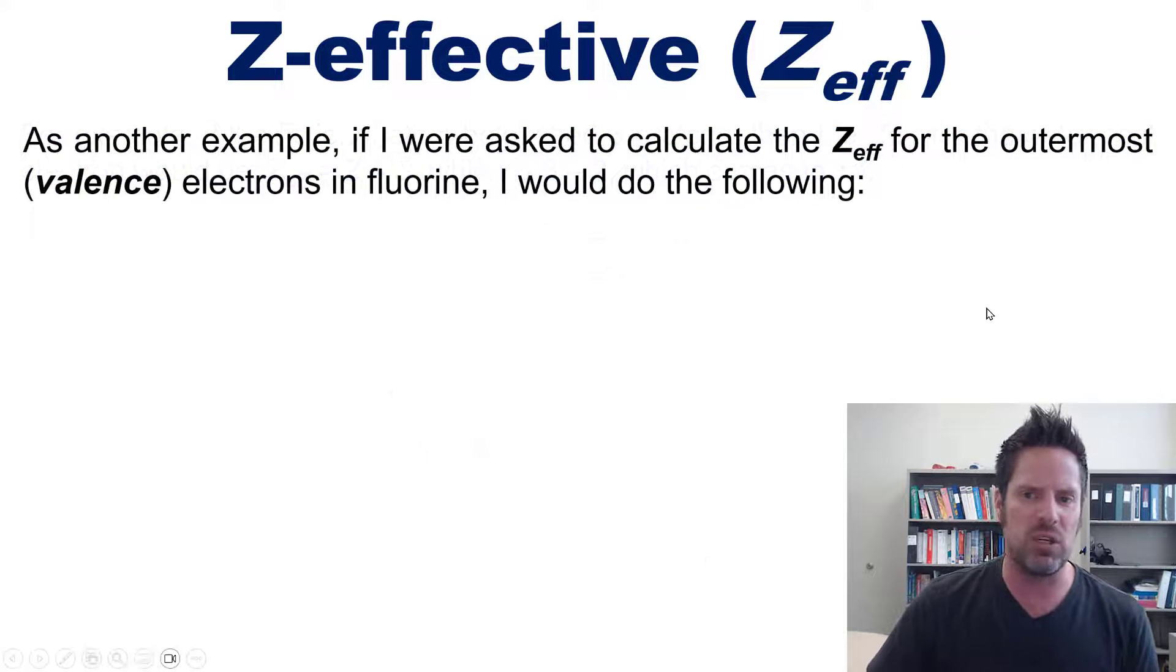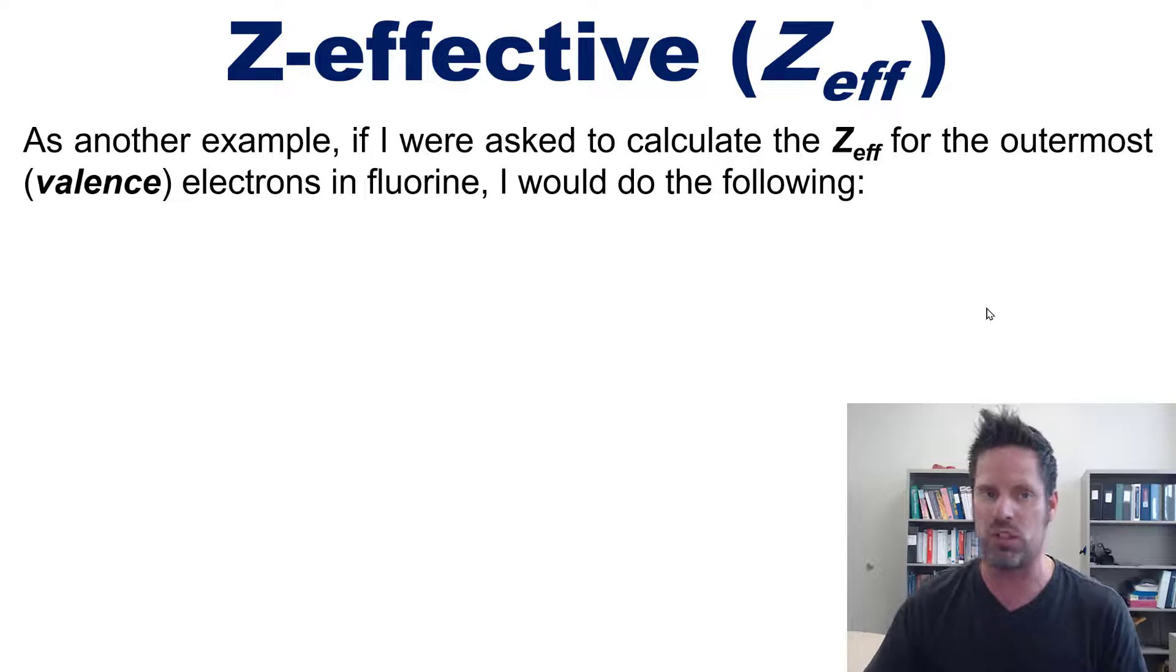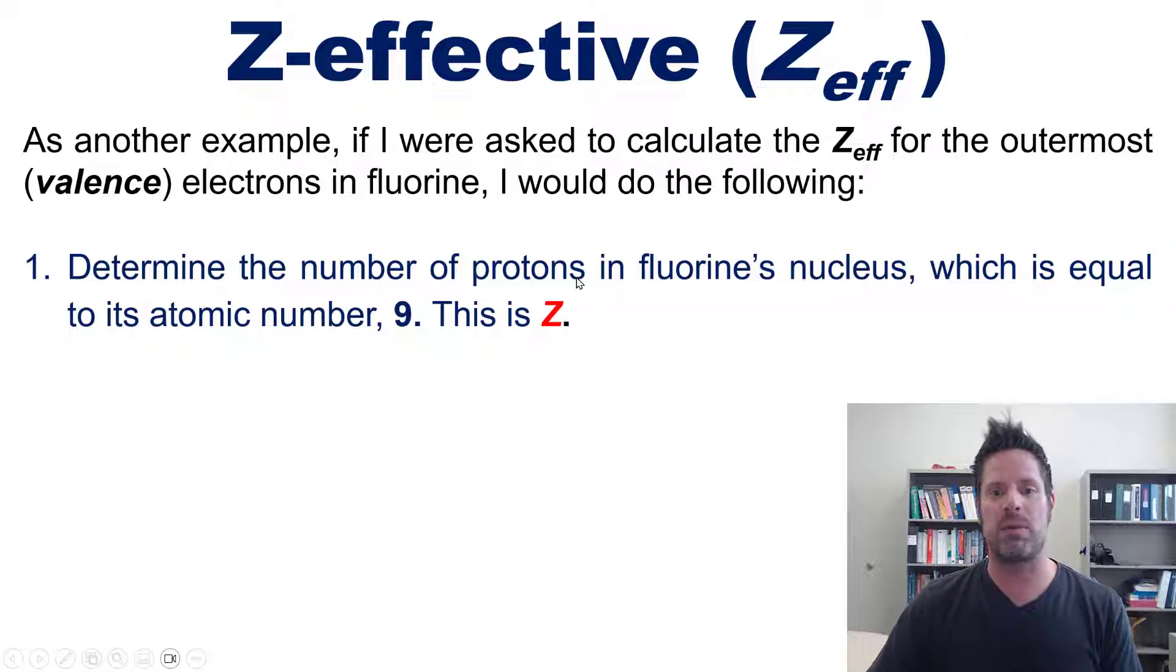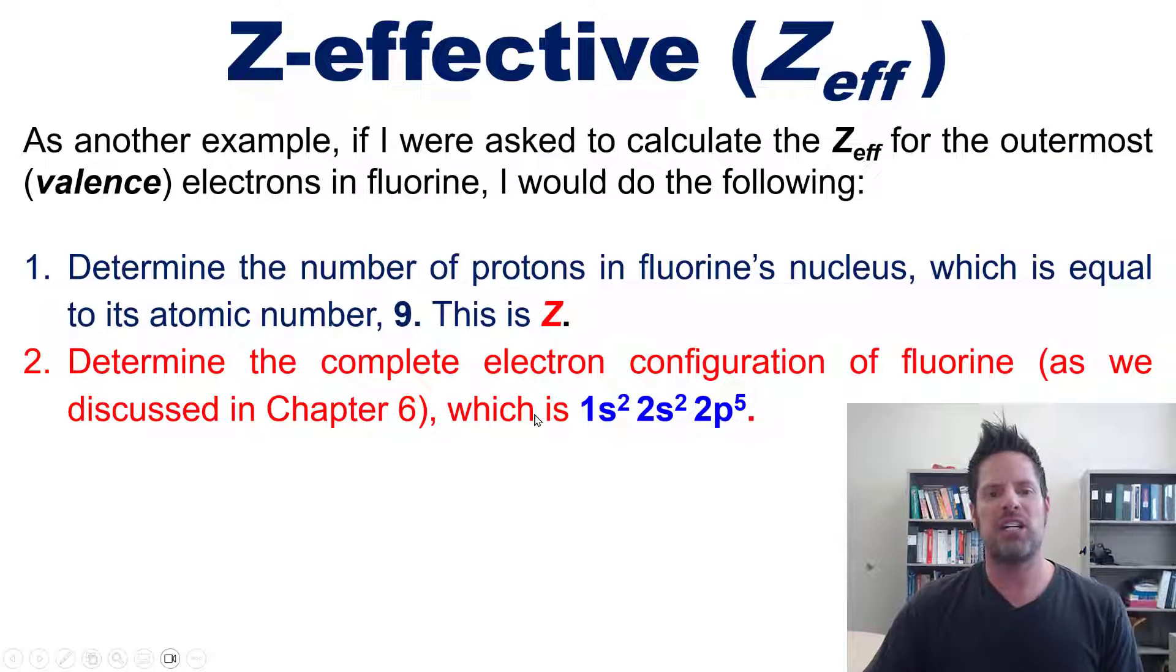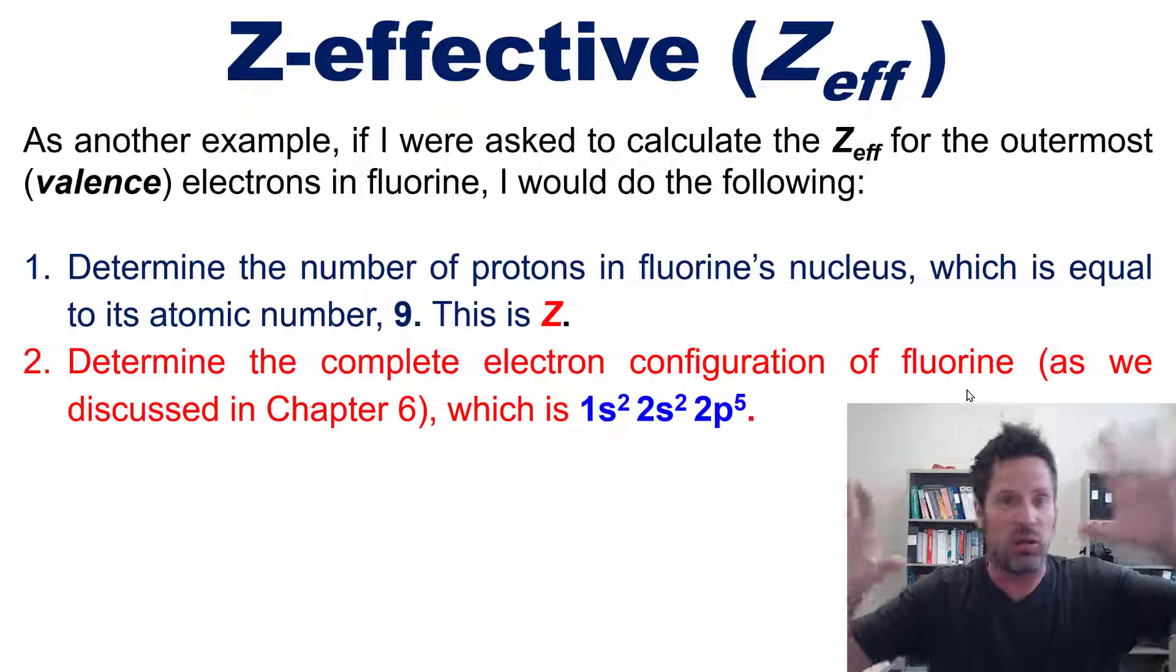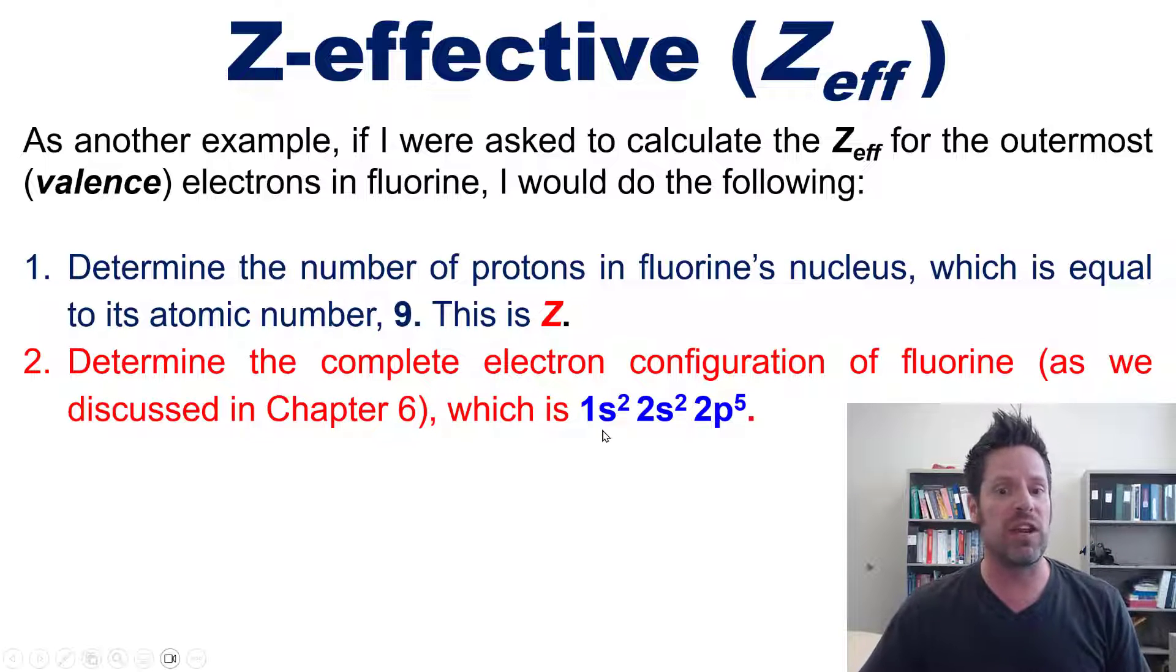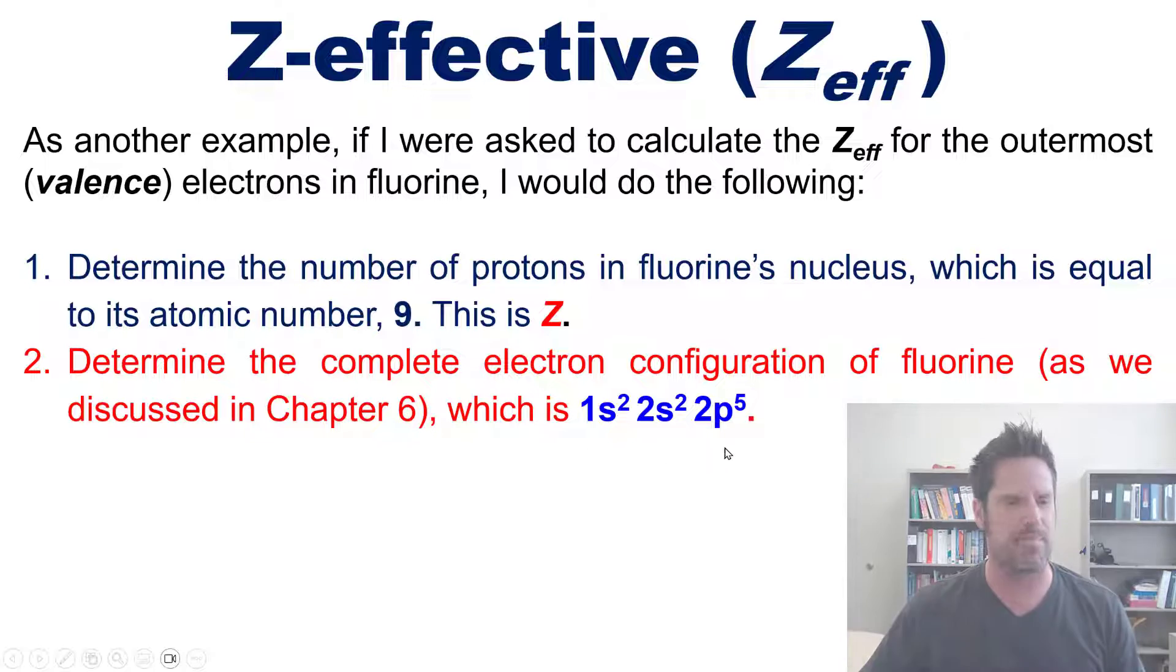As another example, if I were asked to calculate the Z-eff for the outermost electrons in fluorine, I would do the following: First, determine the number of protons in fluorine's nucleus, which is nine. This is Z. Next, determine the complete electron configuration of fluorine, which is 1s² 2s² 2p⁵.